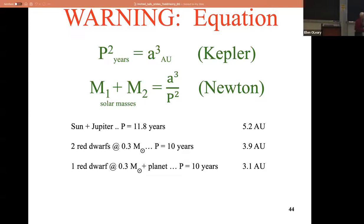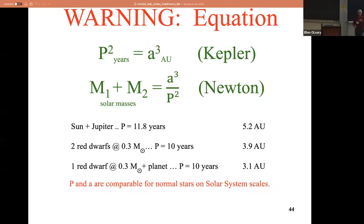Even though Gaia is not at 10 years yet, it's going to get there - fingers crossed. P and A are comparable for all normal stars and solar system scales, so it's always going to be a couple AU for the kind of stuff you're interested in. Dirty secret number one: you only get the sum of the masses. Dirty secret number two - what the radial velocity people do all the time - you only get the minimum mass if you're doing radial velocities. So you have to be careful and you have to assume a stellar mass.